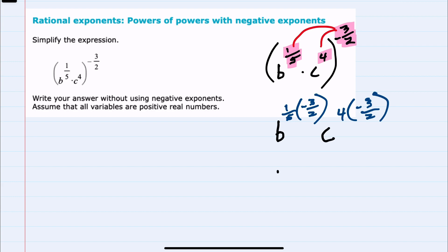And we can now simplify that multiplication. For B, we have a negative times a positive, so a negative. The numerators, one times three is three. And the denominators, five times two is 10.